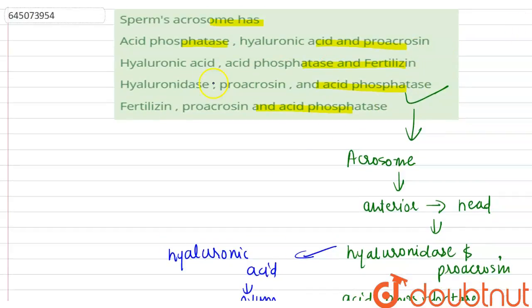So that is why the correct option here is hyaluronidase, pro-acrosin and acid phosphatase, as fertilizin is present on the outermost layer of the ovum, which is the female gamete.